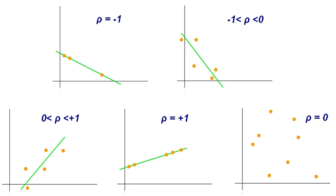The three leading figures in the establishment of population genetics all relied on statistics and developed its use in biology. Ronald Fisher developed several basic statistical methods in support of his work studying crop experiments at Rothamsted Research, including in his books Statistical Methods for Research Workers and The Genetical Theory of Natural Selection. He gave many contributions to genetics and statistics, including ANOVA, p-value concepts, Fisher's exact test and Fisher's equation for population dynamics. He is credited with the sentence: 'natural selection is a mechanism for generating an exceedingly high degree of improbability.'